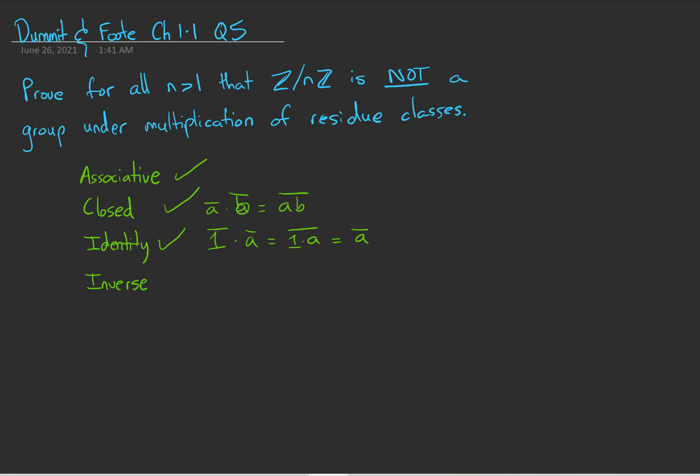But the real catch is inverse. Do we have that? No, actually we don't. Because look at the congruence class of 0. Is there any congruence class that we can multiply by the congruence class of 0 to give us the identity? There is no such class. There is no such x-bar in this case.